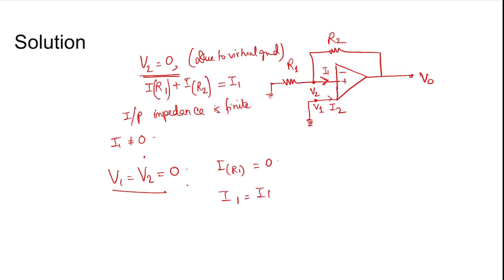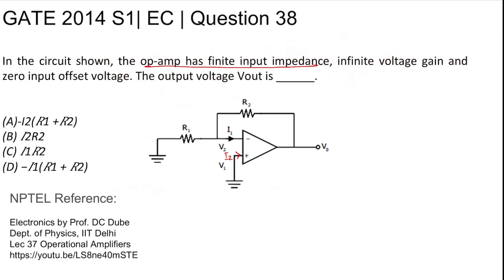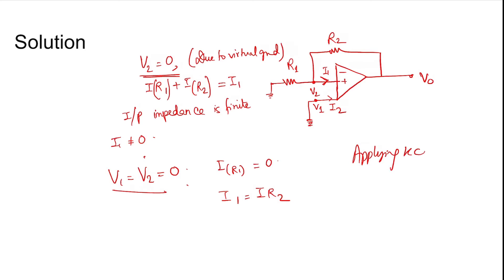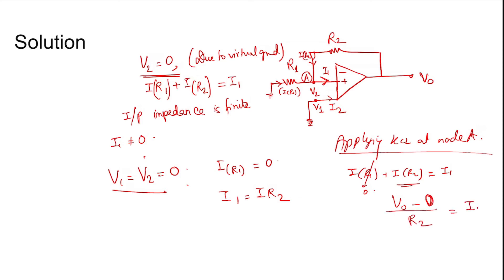Therefore, only I1 equals I_R2. To find the output voltage, applying KCL at node A: I through R1 plus I through R2 equals I1. Since I through R1 is zero, I through R2 equals (V0 minus V2) divided by R2, which equals (V0 minus 0) divided by R2, giving V0 equals I1 times R2.